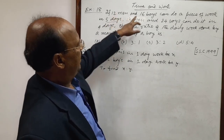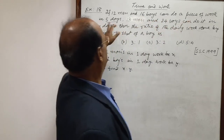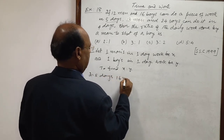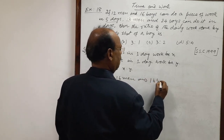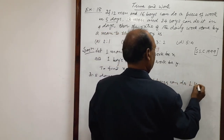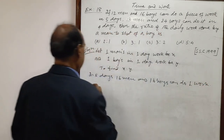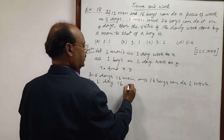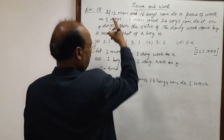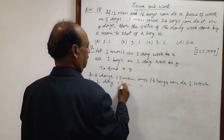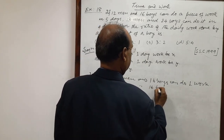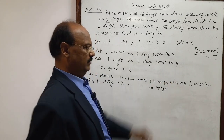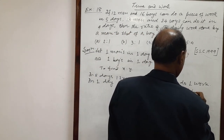And what is given? 12 men and 16 boys can do a piece of work in 5 days. So in 5 days they complete 1 full work, meaning in one day they can do 1 by 5 of the work.